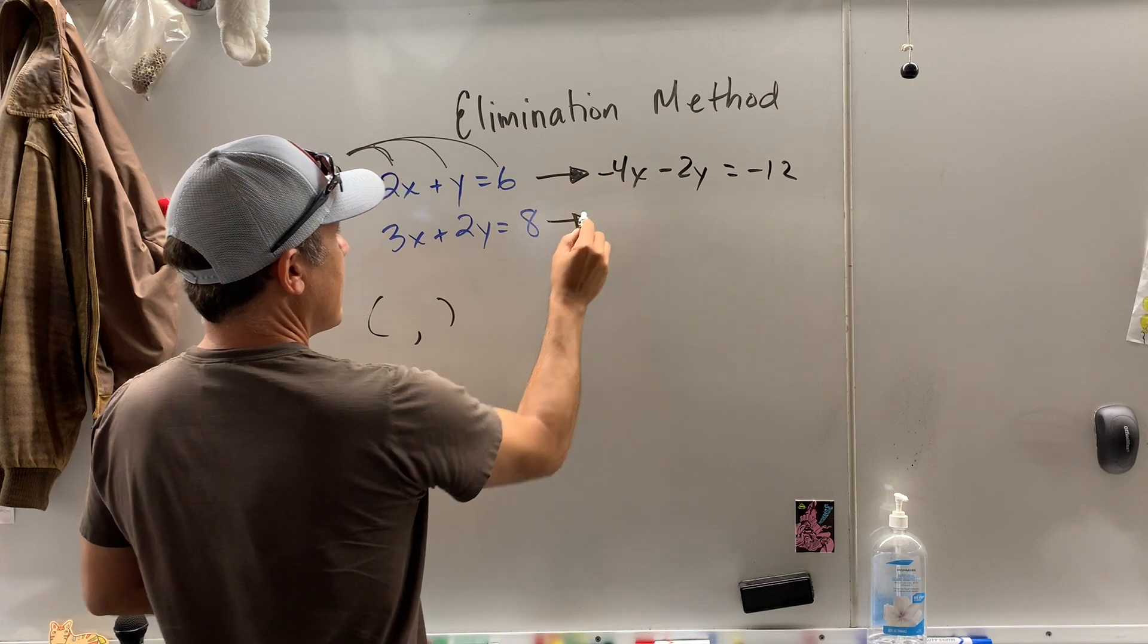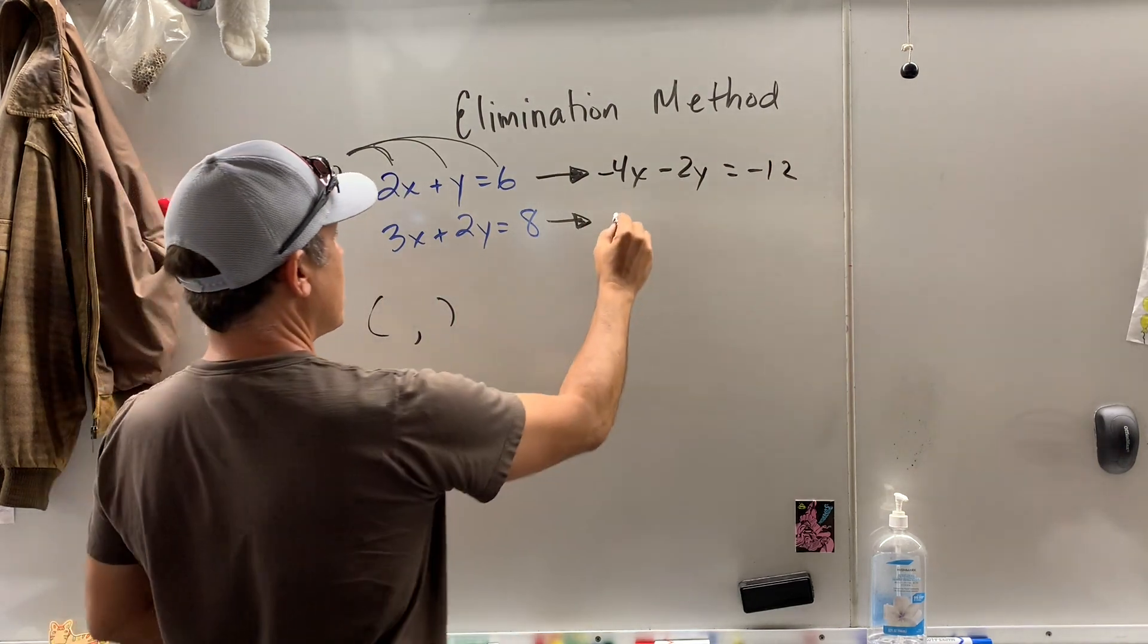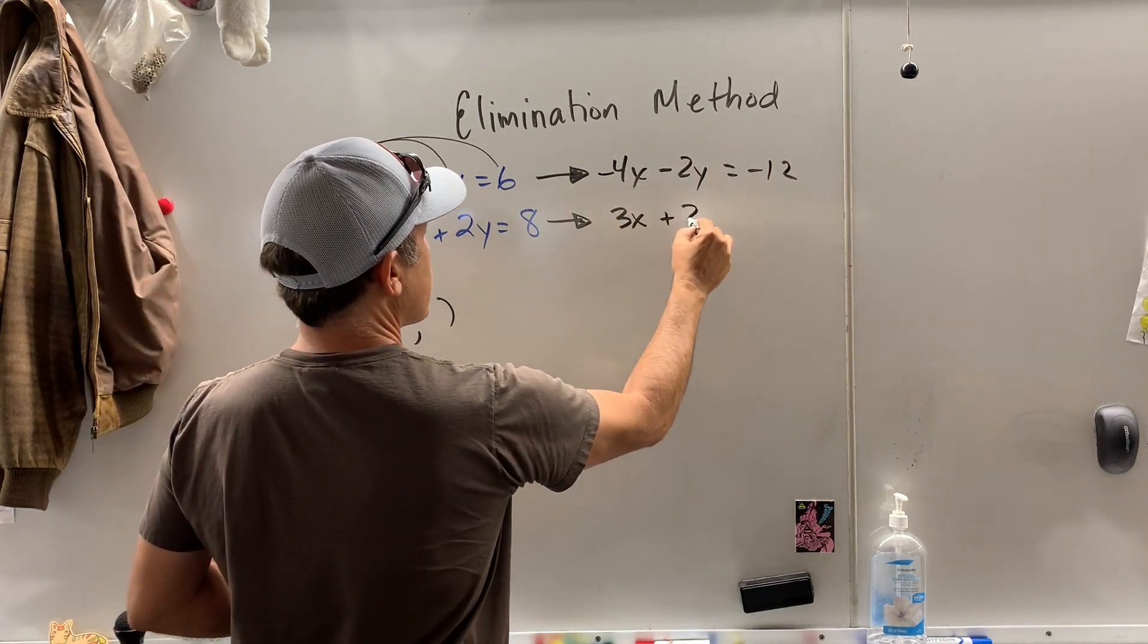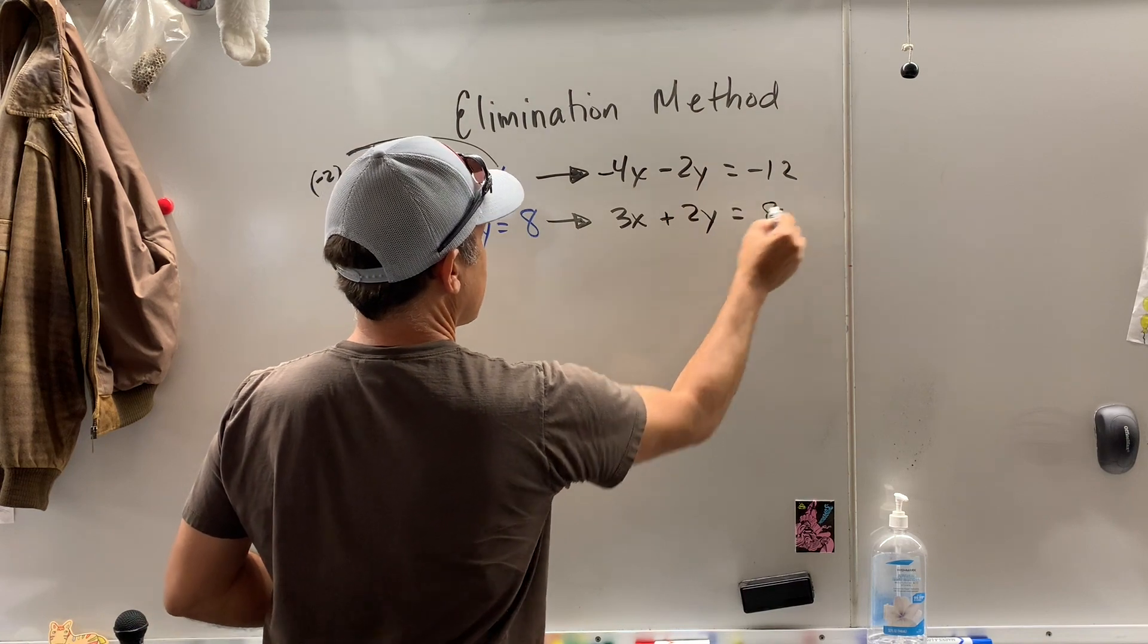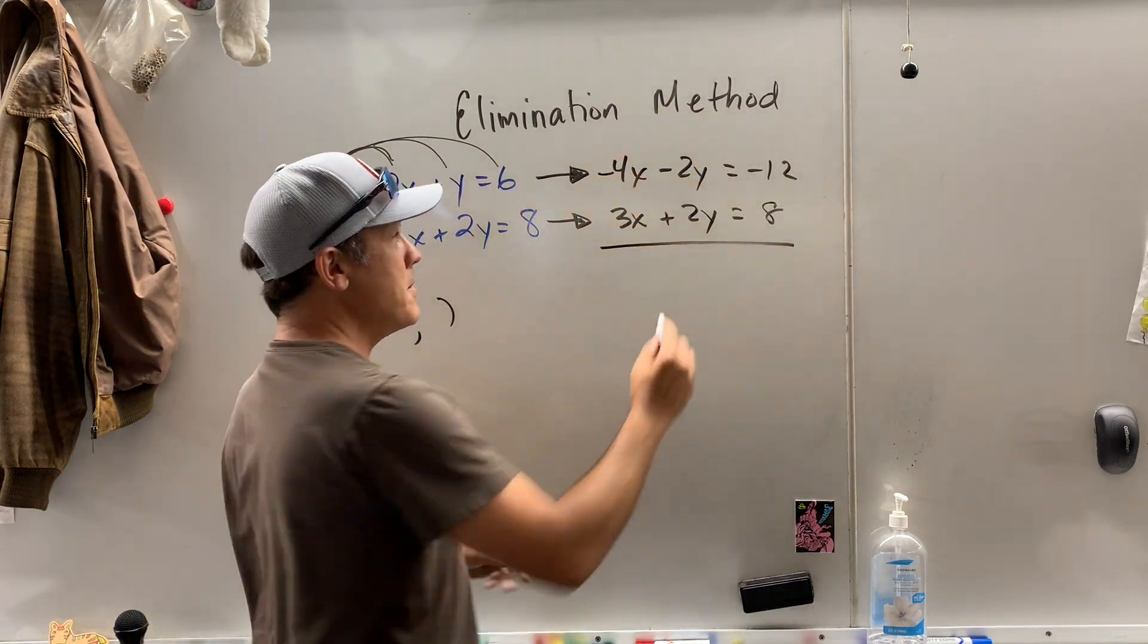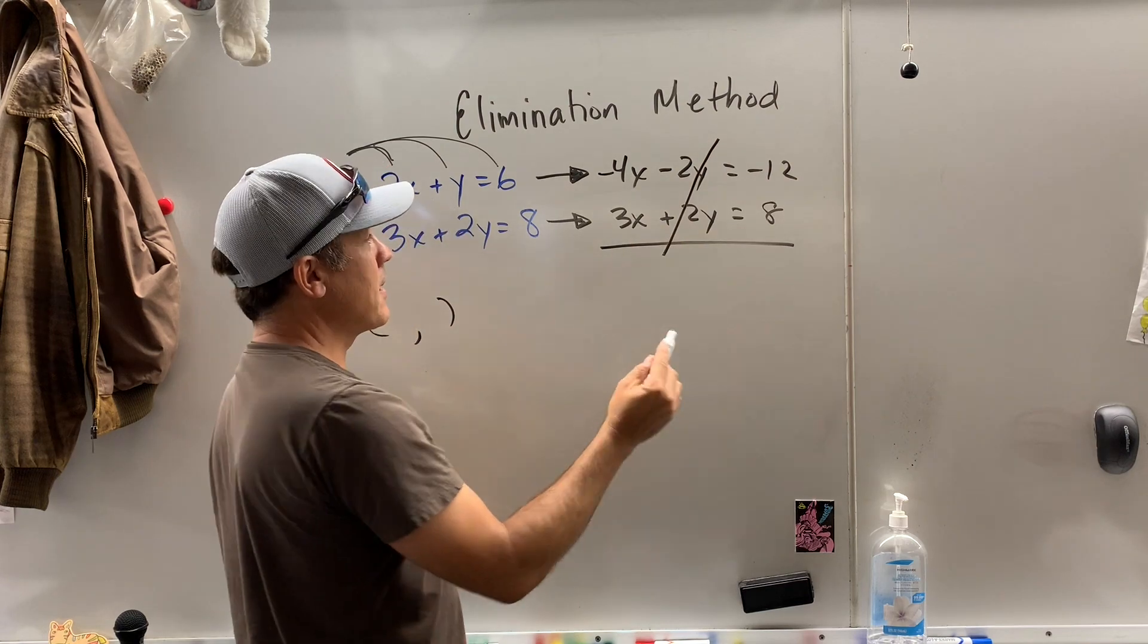Now here, I could just bring the whole thing over. I don't need to monkey around. 3x plus 2y equals 8. Now, can you see it? It's going to eliminate, goes bye-bye.